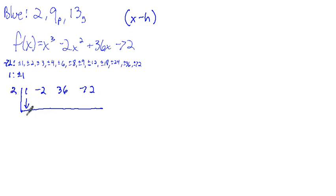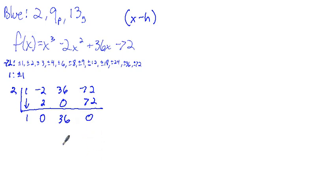Here comes 1, 2, 0, 0, 36, and 2 times 36 is 72, and we get 0. So there's something — we have at least found a zero. x equals 2 is a zero, which means x minus 2 is a factor — one of those linear factors we're supposed to find.